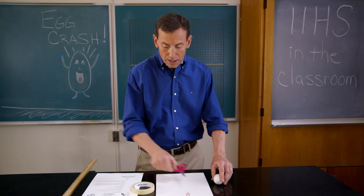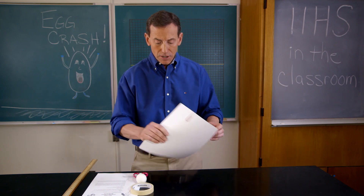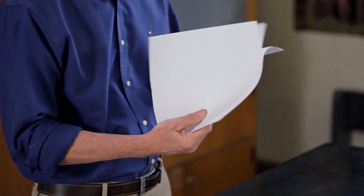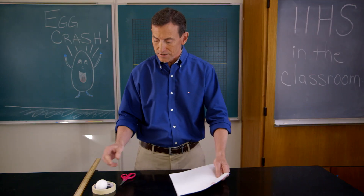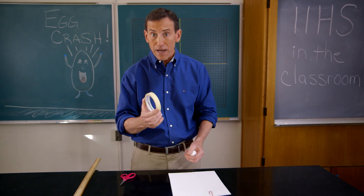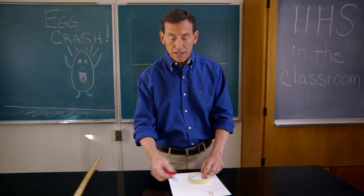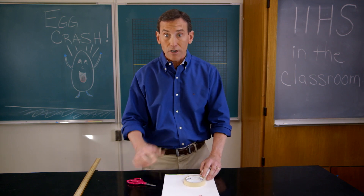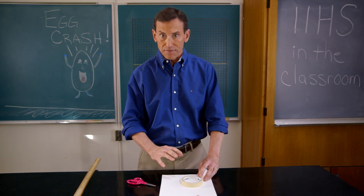To design that landing device, you're going to use no more than 10 sheets of paper — you don't have to use them all — and a meter of masking tape. You also have a pair of scissors, so feel free to cut up the paper any way you'd like: fold it, crumple it, origami, whatever you want to do to design your collision safety device.